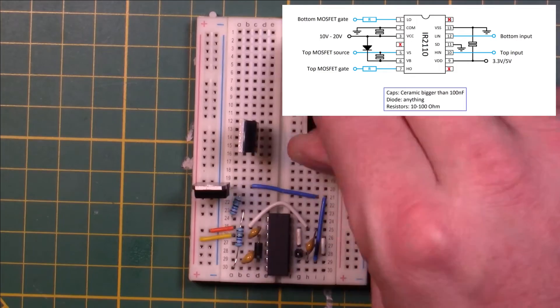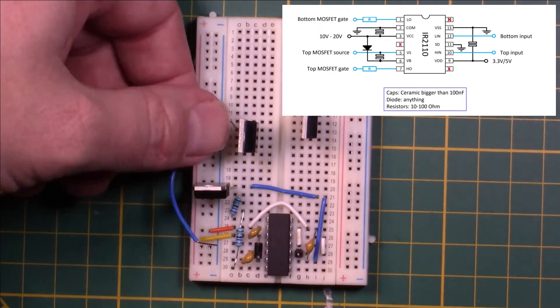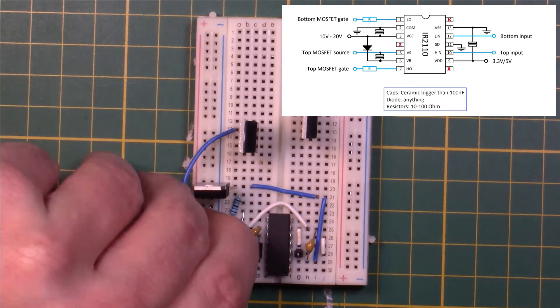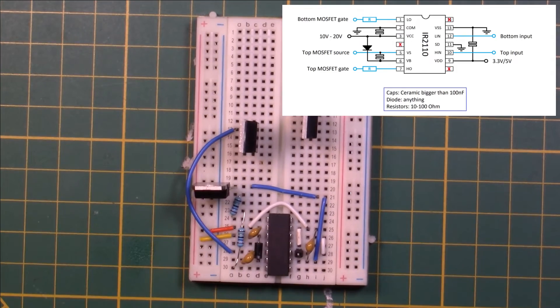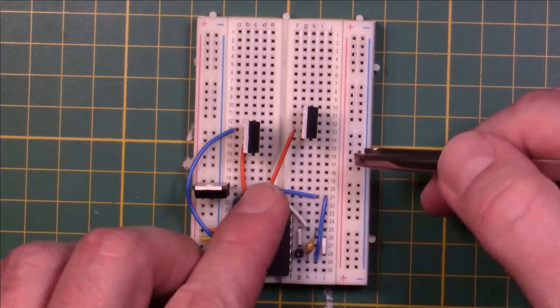Now adding the MOSFETs. The left one is the top MOSFET. The last IC pin to connect is the high side MOSFET's source pin to the actual MOSFET. Complete both gate connections from resistor to MOSFET.